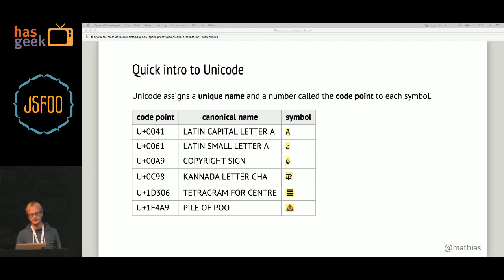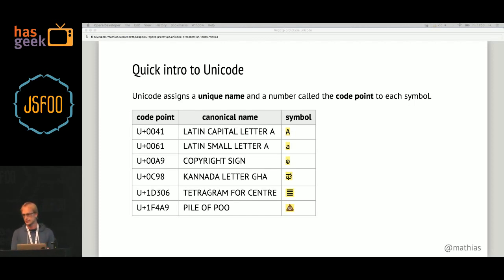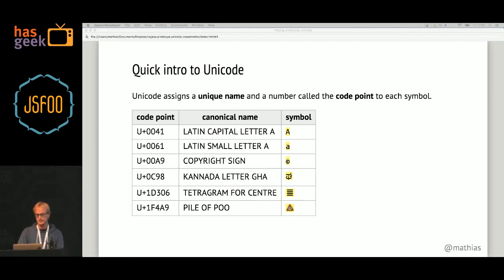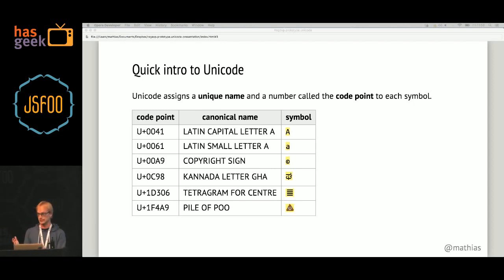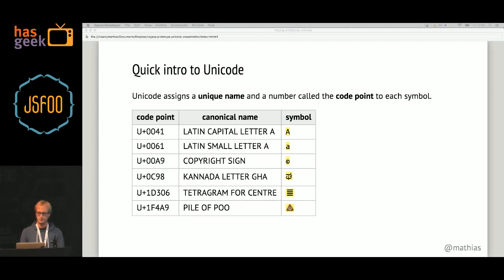For example, there's the Latin capital letter A, which has the code point U+0041. Code points are usually formatted like this — they get the U+ prefix and then they're followed by hexadecimal digits, usually zero-padded to at least four digits. Another example is the Latin small letter A — a completely different symbol. Even though you might think they're related because one is the uppercase version of the other, they each get their own unique canonical name and unique code point. The same goes for the copyright sign and Kannada letters.